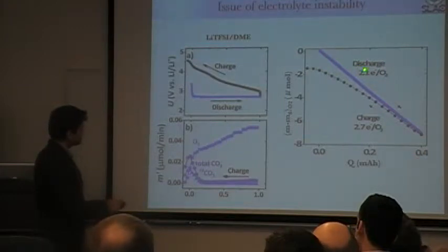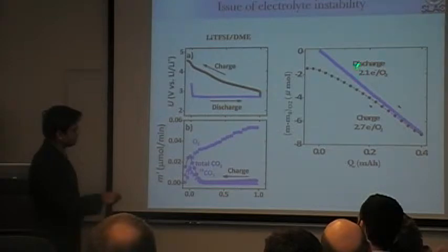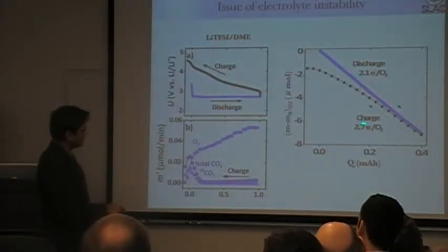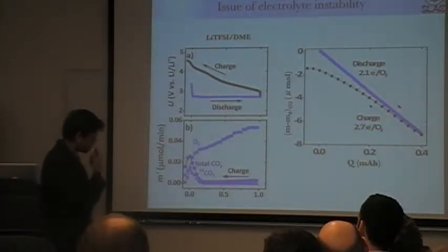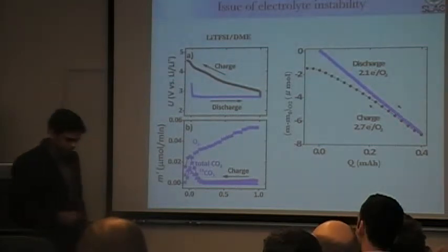One other thing is to look at what is the electron count per oxygen during discharge. It's nearly perfect, two electrons per oxygen. When you charge it, it goes to about 2.7 electrons per oxygen. So there's something that goes wrong during charge.